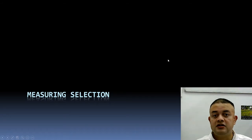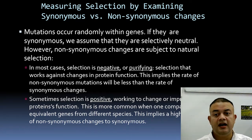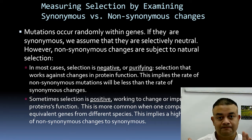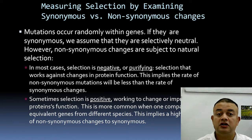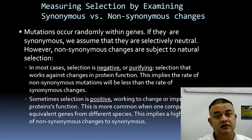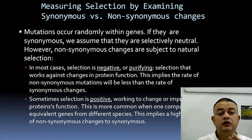To measure selection, we count synonymous versus non-synonymous changes. Mutations within genes are quite random; synonymous ones are assumed to be selectively neutral. The neutral theory proposed that most mutations are evolutionarily neutral because they are synonymous. Non-synonymous mutations are mostly under purifying selection — that is, negative selection — rather than positive selection.